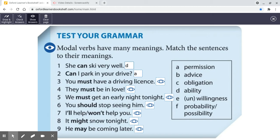You must have a driving license. That's your obligation. They must be in love. That's their obligation. No, of course not. You're having a guess, aren't you? And if you're guessing something, we use must for probability. Remember the thing I said? What's that sound? Oh, it must be the postman.